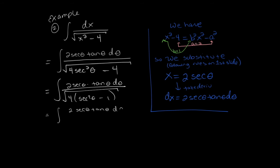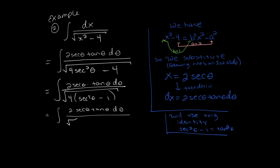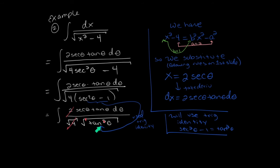This factoring of a squared happens in every trig substitution problem. We then use the trig identity secant squared minus 1 equals tangent squared under the square root. A lot cancels: the 2 cancels with the square root of 4, the square root cancels with the square, leaving just a single tangent in the denominator. There's also a tangent in the numerator from the dx, so the tangents cancel entirely. At the end of the day, we just have the antiderivative of secant theta.